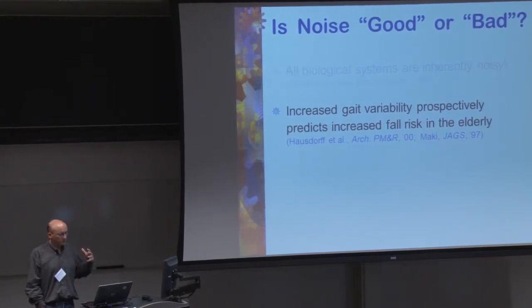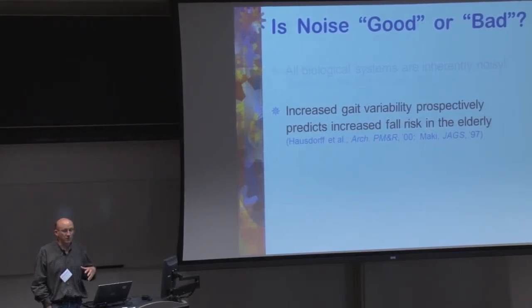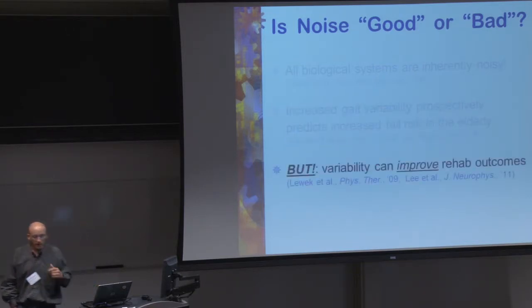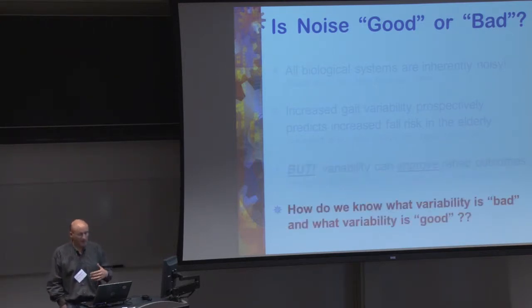So on the one hand, it's been sort of proposed that increased gait variability can predict increased risk of falls in the elderly. And that sounds nice, but there's an awful lot of, sort of, I don't know, argument, I guess, about what variability of what. And nobody really can quite nail that down. On the other hand, there are cases where variability can, introducing additional variability in the system can actually improve rehab outcomes. And I don't have time to get into the details of that. But you can make it take advantage of variability in some cases. And so we're interested in this general question of how do we know what variability is bad and what variability is good? And how can we detect that? And how can we actually sort of make sense of some of that?